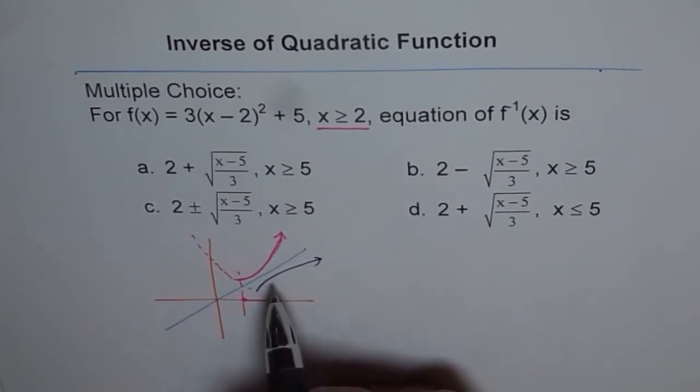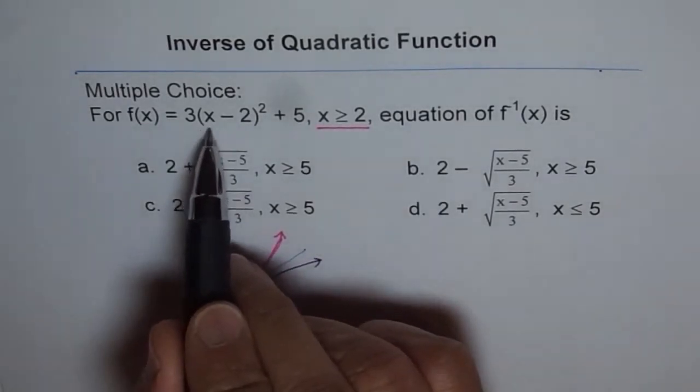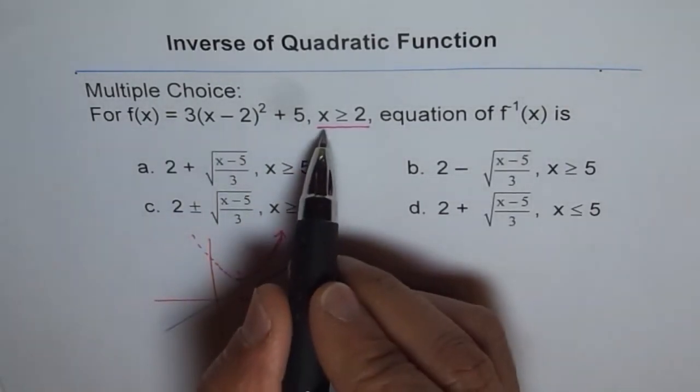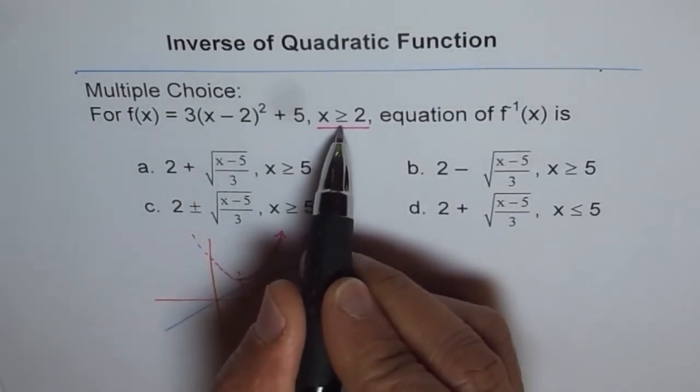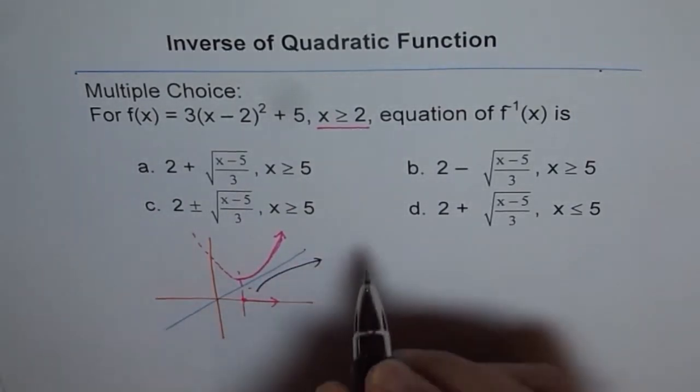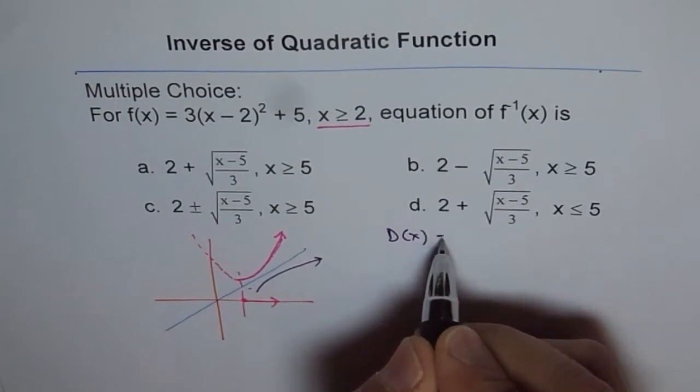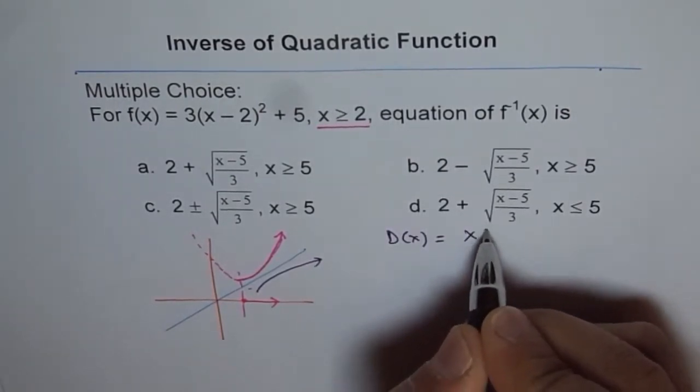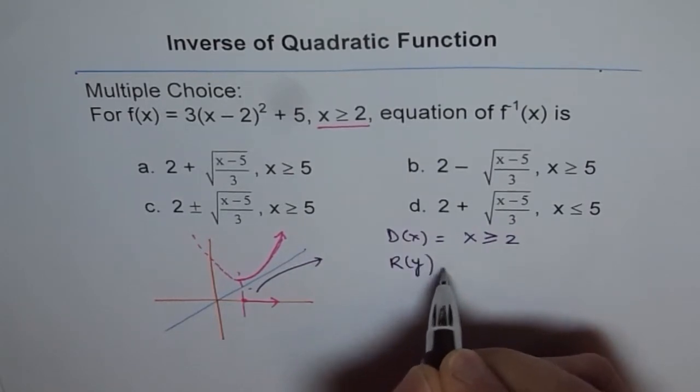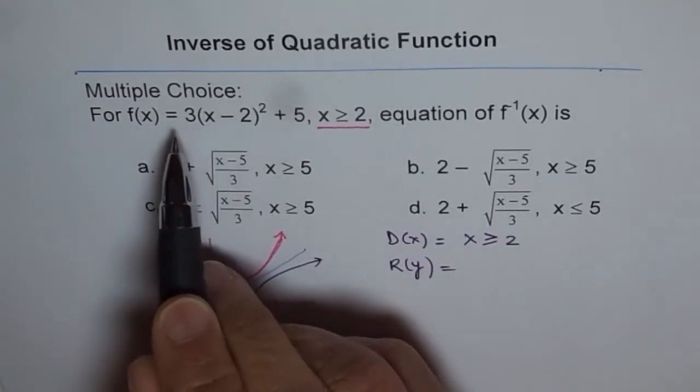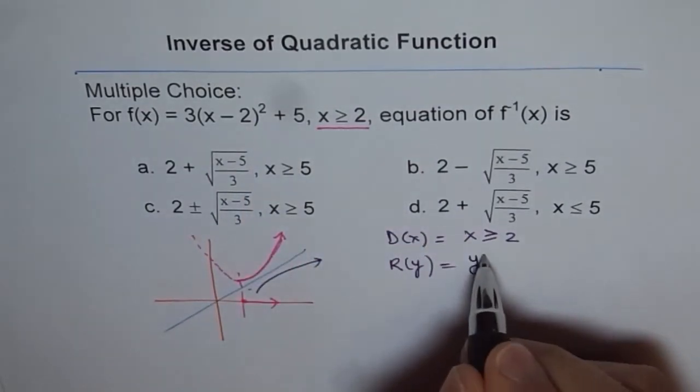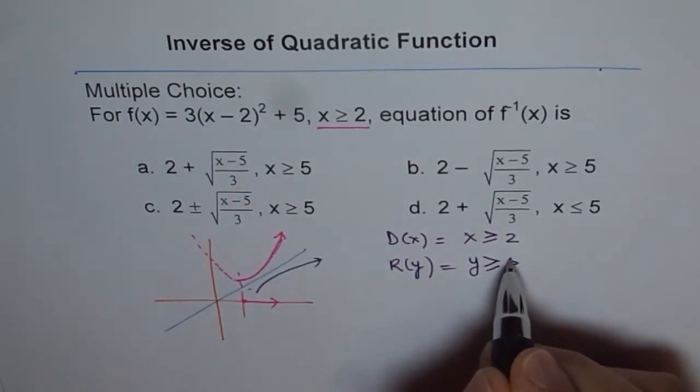Now, the whole idea here is, what is the domain and range of the given function? Domain is already given to you, x greater than or equal to 2. That is the domain. And what is the range? Range of this function is, since it is opening upwards, from 5, we have y greater than or equal to 5.